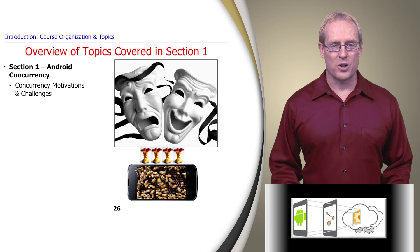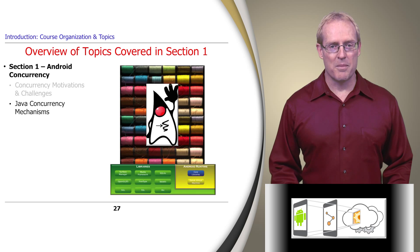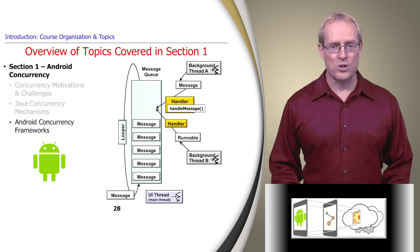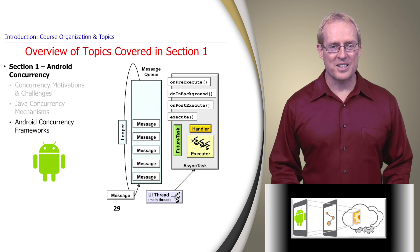After briefly covering the motivations for and challenges of concurrency, this section focuses on concurrency mechanisms, frameworks, and patterns that Android applies and provides to create, control, and terminate multiple threads that run concurrently within a process. Some Android concurrency mechanisms discussed are based on standard Java features, such as threads, synchronized methods and statements, reentrant locks, condition objects, and semaphores. We also cover key Android concurrency frameworks, such as its handlers, runnables, and messages or HaMeR framework, and the async task framework.